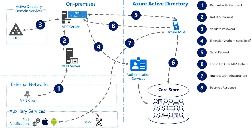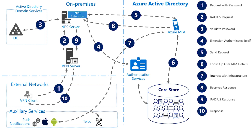The user who receives the request can either choose to approve or deny the request, which sends that response back to the Azure MFA service. The Azure MFA service provides this response back to the NPS extension on the NPS server. Now that NPS has an authentication response, it will pass the Radius response back to the VPN server. If the response was accepted, the VPN server would complete the connection and respond back to the VPN client that they are now connected. Else if they receive the reject, then the access would not be granted.